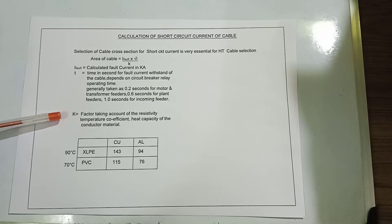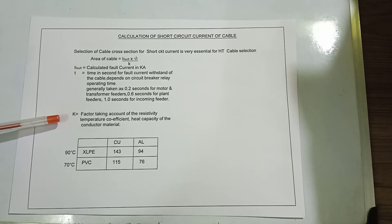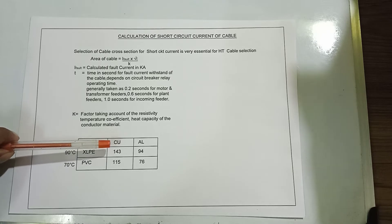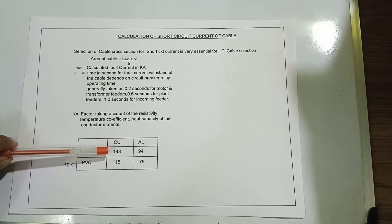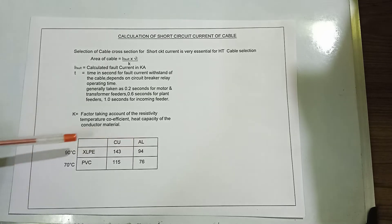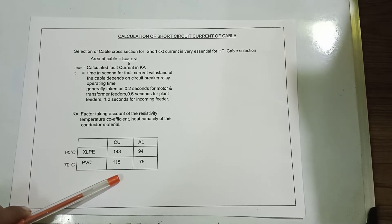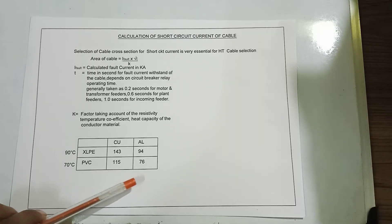k is a factor taking account of the resistivity and temperature coefficient and heat capacity of the conductor material. For XLPE at 90°C: copper k = 143, aluminium k = 94. For PVC cable at 70°C: copper k = 115, aluminium k = 76.